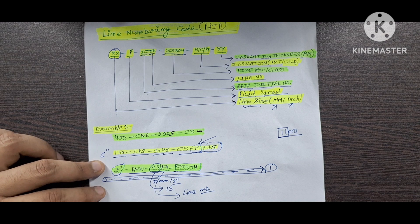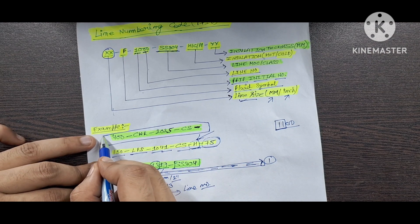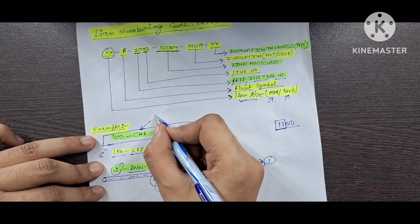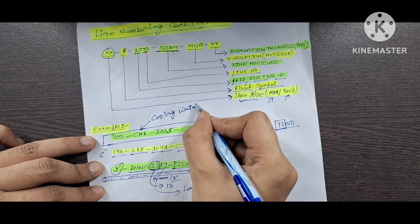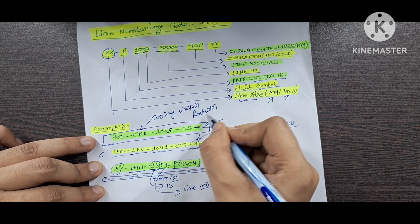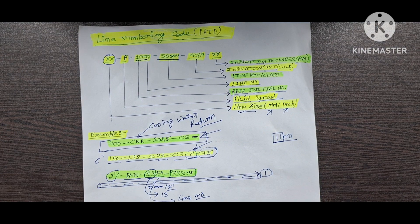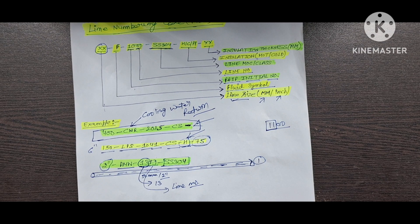Are you getting the point? Please let me know in the comments box. CWR means cooling water return. That's how you could read the line numbering code in the P&ID, which is very, very important to know if you want to learn how to read the P&ID.